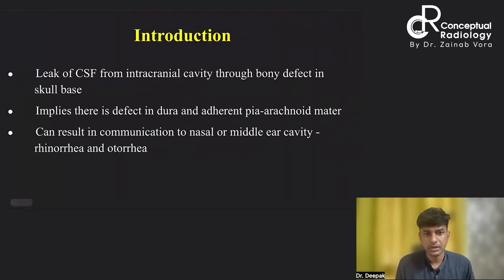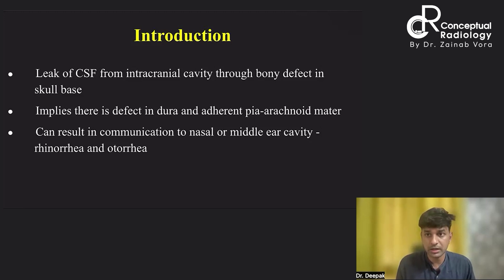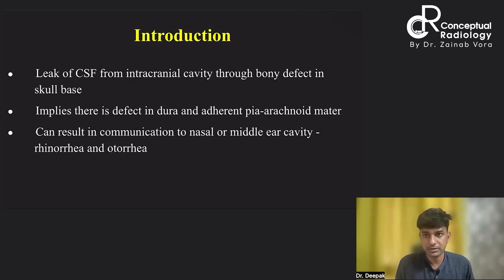CSF fistula is defined as a leak of CSF from the intracranial cavity through a defect in the base of skull. The defect can go through the anterior cranial fossa or the middle cranial fossa, communicating with the nasal cavity or the middle ear cavity respectively. These two are the sites where CSF fistula formation can occur.